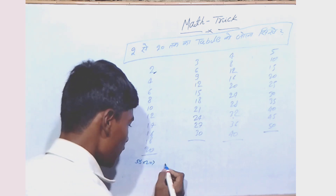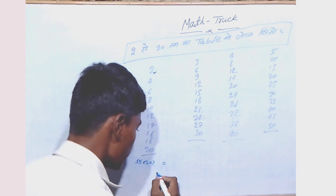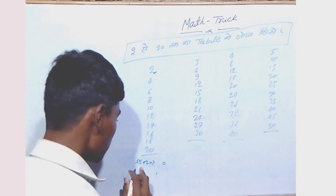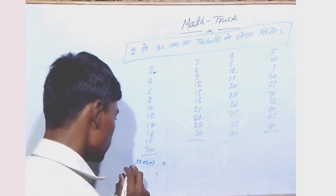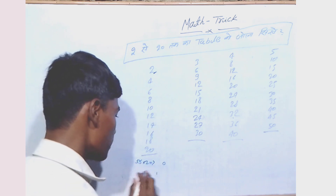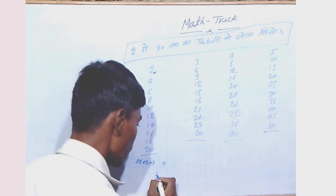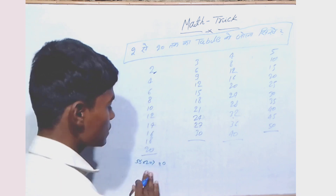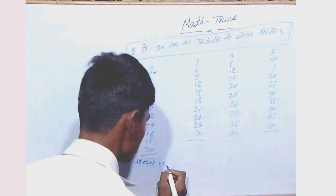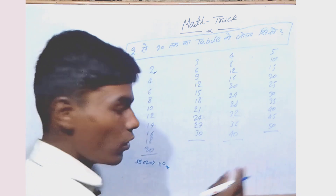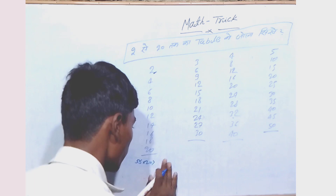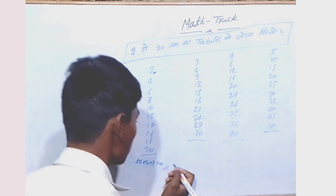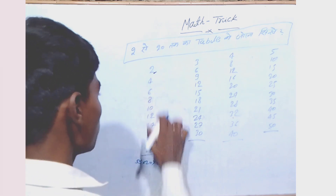5 times 10 is 50, and carry is 1. And after that, you again multiply 5 times 10 and 1 carry makes 11. So the answer has come — 110. This is the answer.